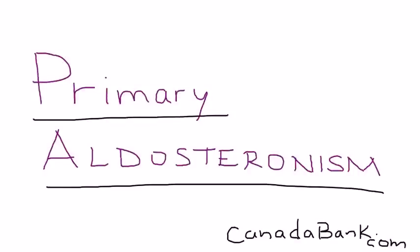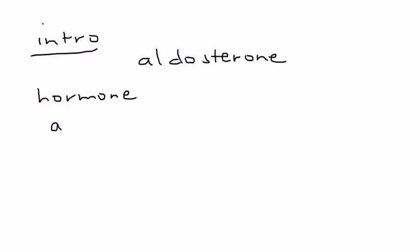Primary aldosteronism is the topic, and before we get started, I think it's important to talk a little bit about aldosterone. What exactly is it, since we're talking about a condition where there's elevated levels. Well, aldosterone is a hormone, and it comes from the adrenal cortex.